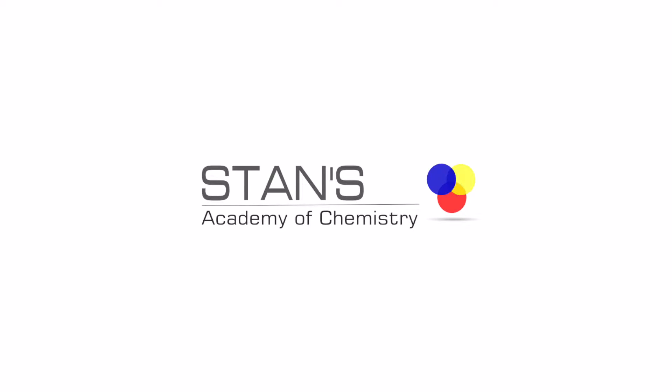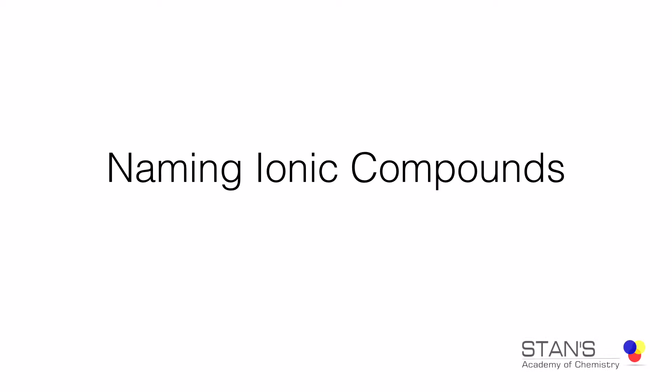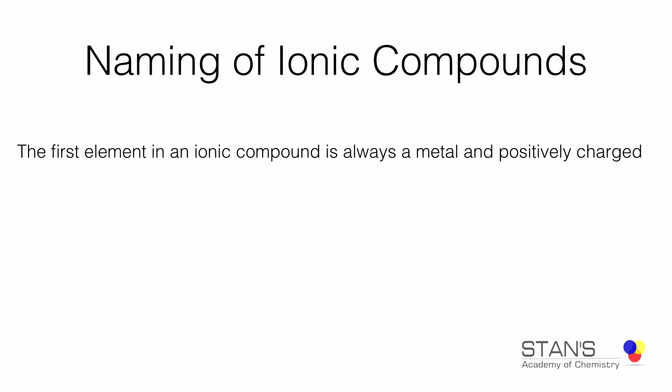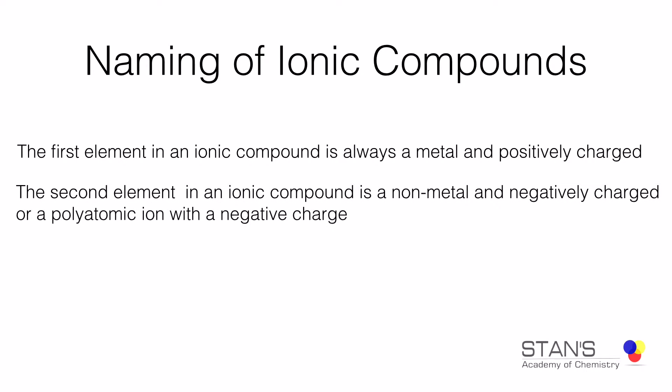In this video, we will name simple ionic compounds. In an ionic compound, the first element is always a metal and it is positively charged. The second element in an ionic compound is a non-metal and it is negatively charged, or it could be a polyatomic ion with a negative charge.